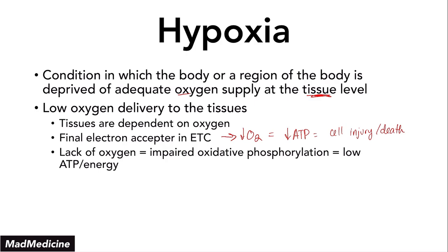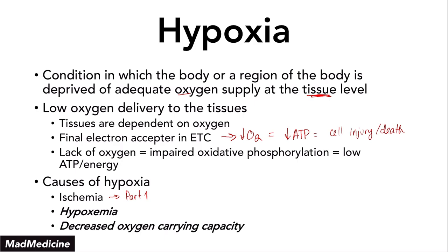This just goes back to basic science. Now, there are three main causes of hypoxia under which all the other specific causes can be classified. The first one is ischemia, which we've already discussed in part one. The other two causes are hypoxemia and decreased oxygen carrying capacity. Both of these concepts are very high yield — you will be tested on this at one point in your medical education, whether it's a board exam or a class exam.